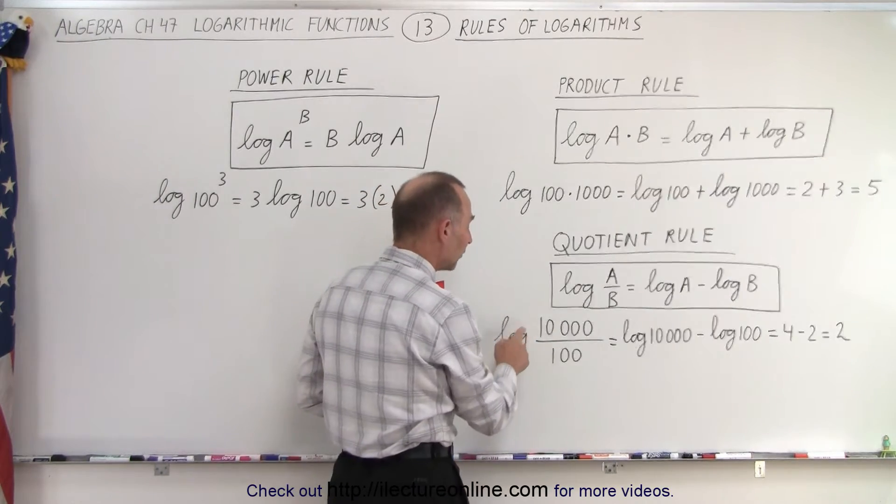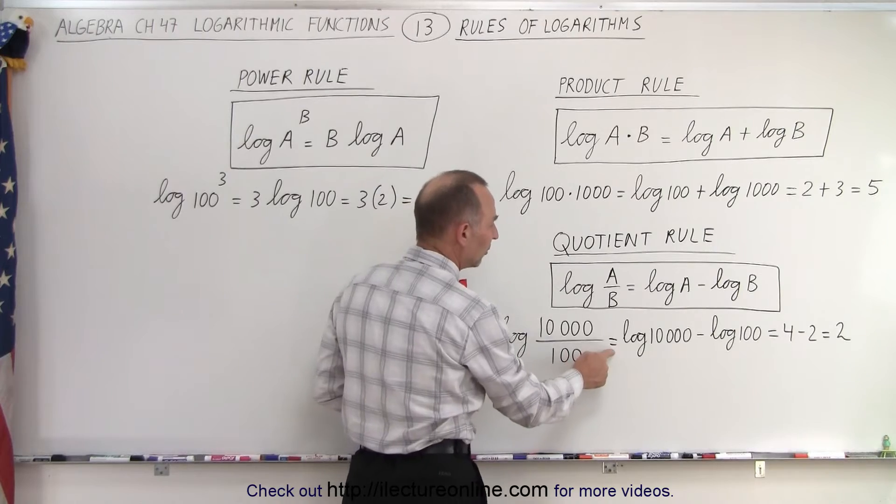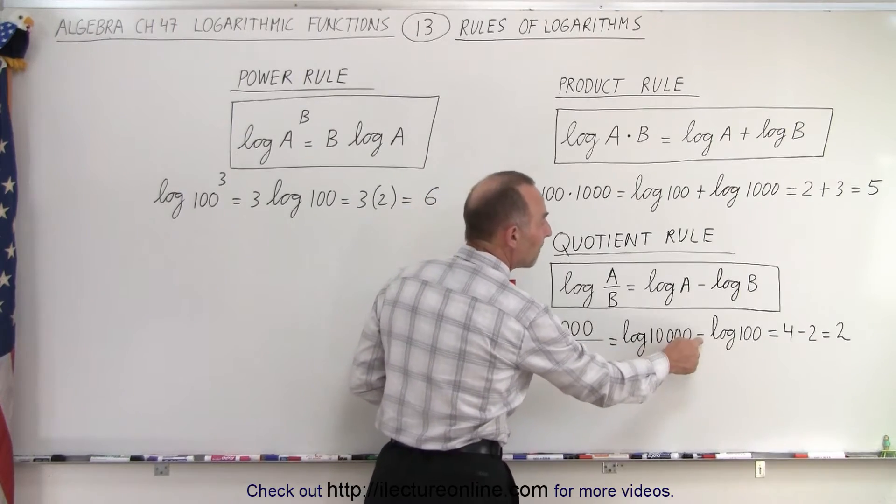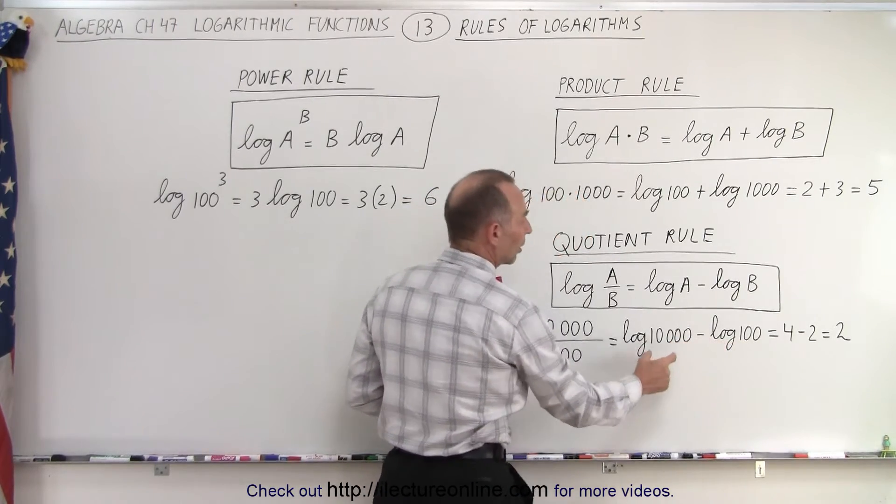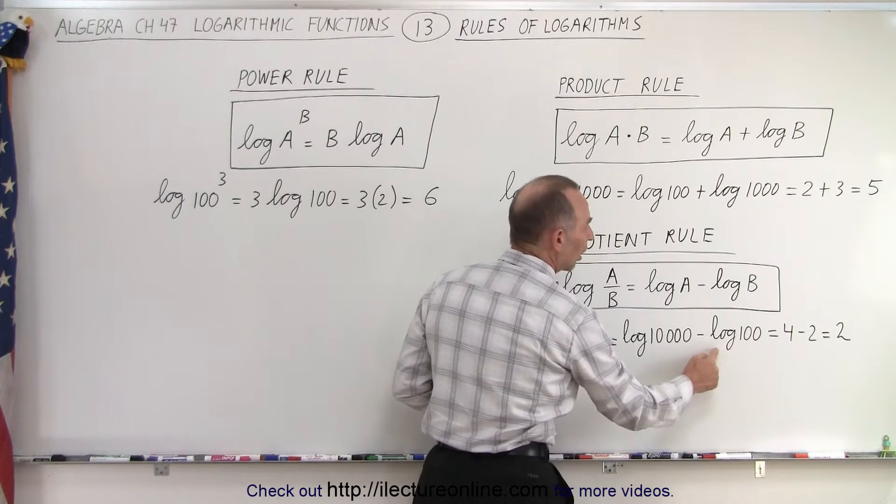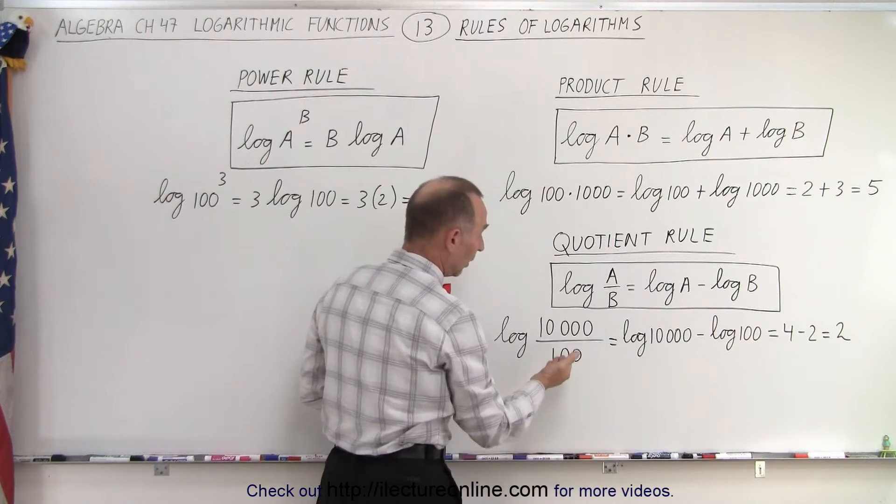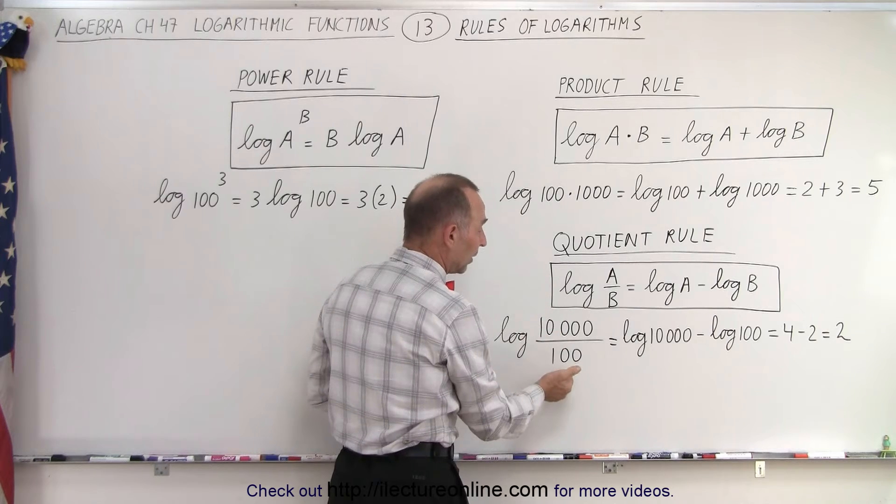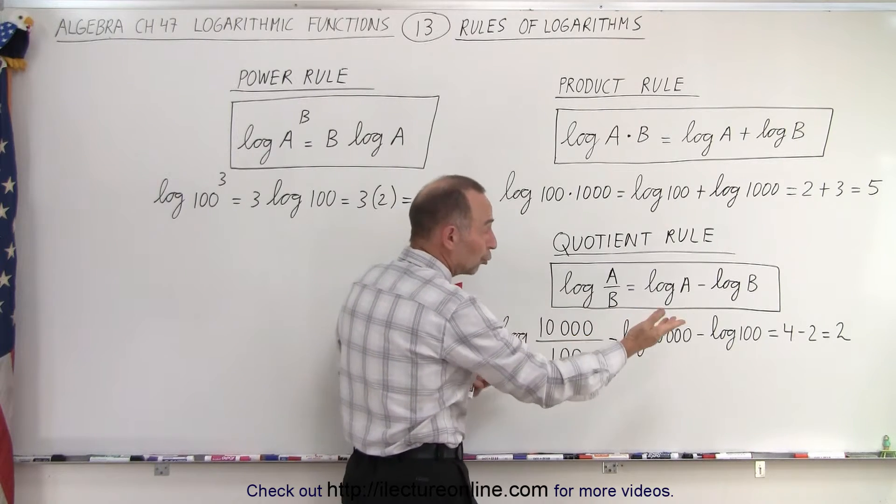Here's an example. The log of 10,000 divided by 100 is equal to the log of 10,000 minus the log of 100. The log of 10,000 is 4, the log of 100 is 2, 4 minus 2 is 2, or 10,000 divided by 100 is 100, the log of 100 is 2.